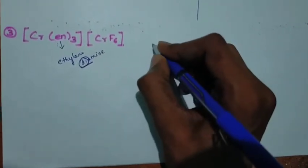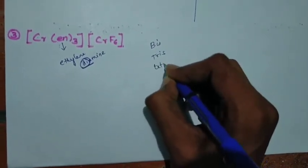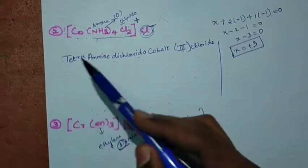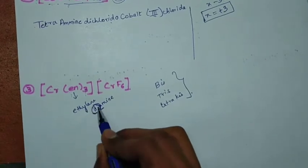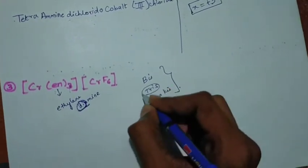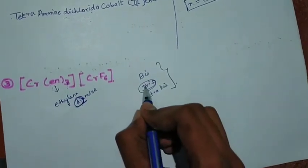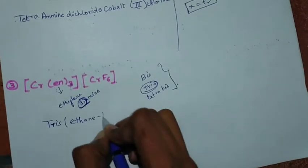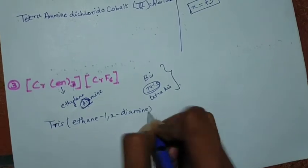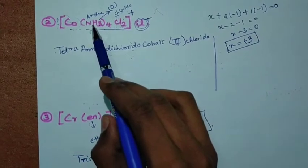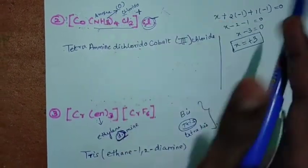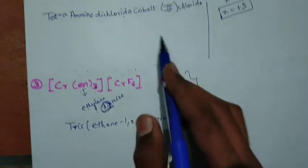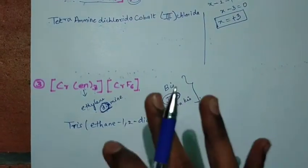There is a prefix system for ligands with complex names: bis, tris, tetrakis are used instead of di, tri, tetra. So for simple ligands we use di/tri/tetra, but for ligand names like ethane-1,2-diamine (ethylene diamine) we use bis, tris, tetrakis. So instead of tetra-amine for that ligand, we say tetrakis(ethane-1,2-diamine).